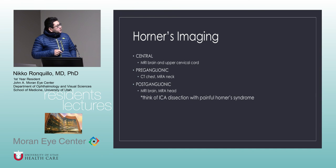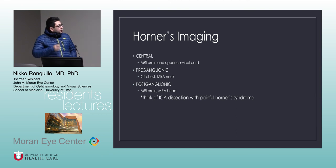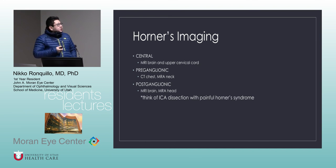For Horner syndrome imaging: central processes require MRI of the brain and upper cervical cord. For preganglionic lesions, CT chest and MRI of the neck. For postganglionic lesions, MRI of the brain and head. Finally, think of internal carotid artery dissection with painful Horner syndrome.